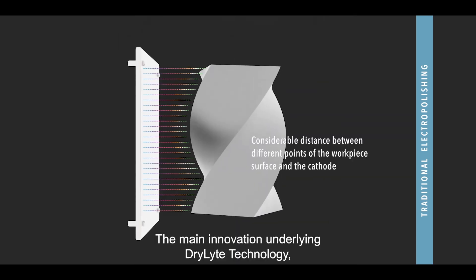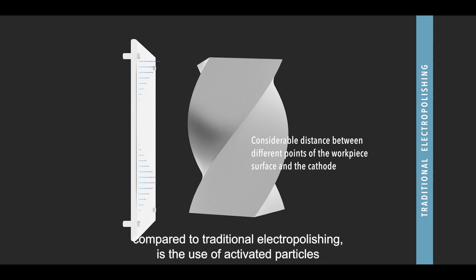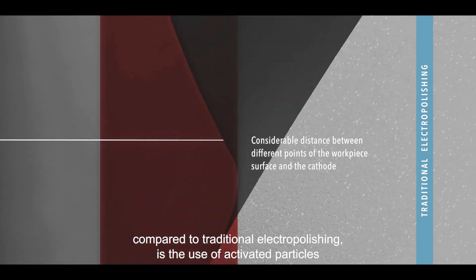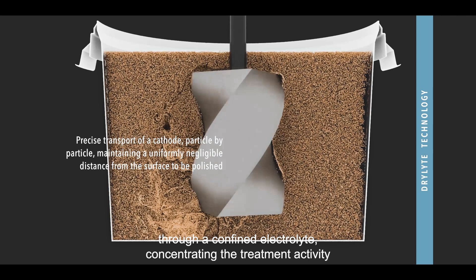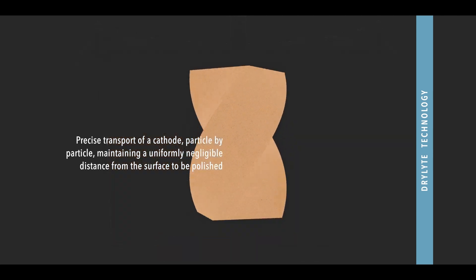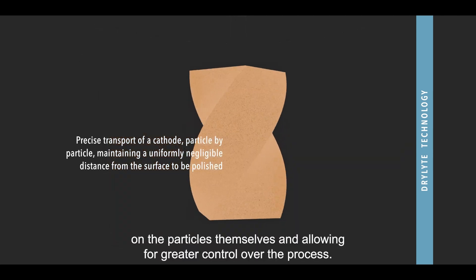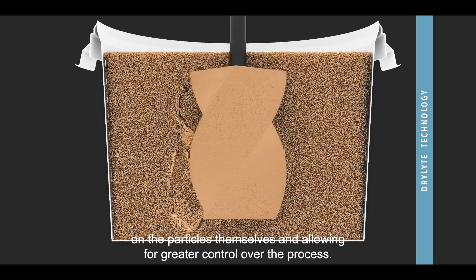The main innovation underlying D-Lite technology compared to traditional electro polishing is the use of activated particles through a confined electrolyte, concentrating the treatment activity on the particles themselves and allowing for greater control over the process.